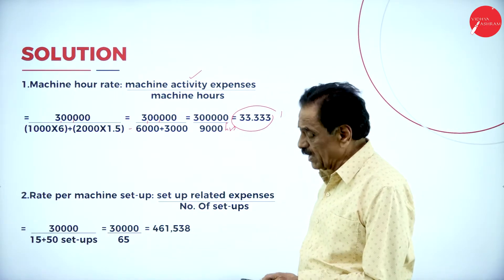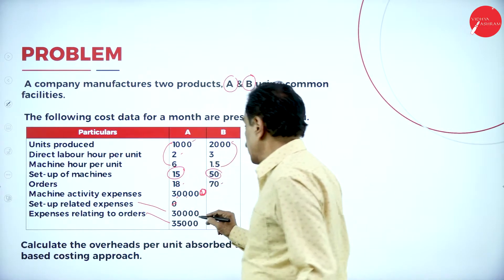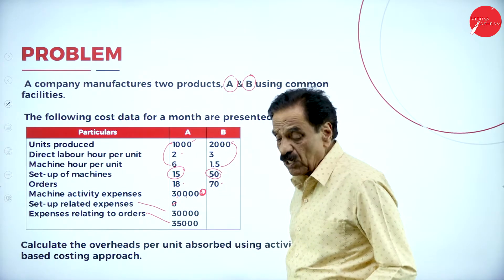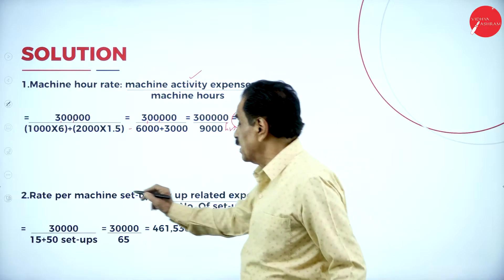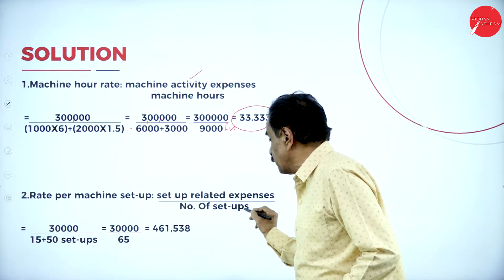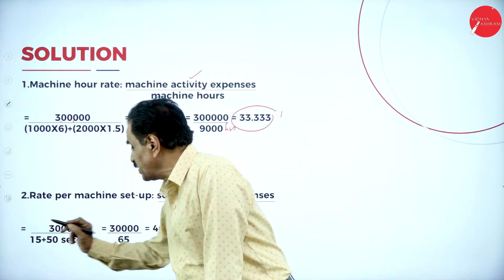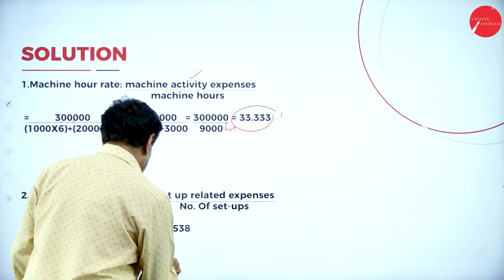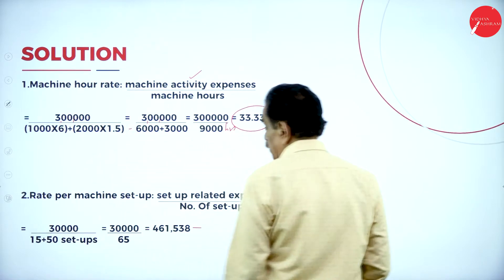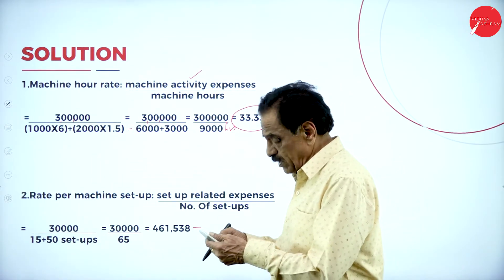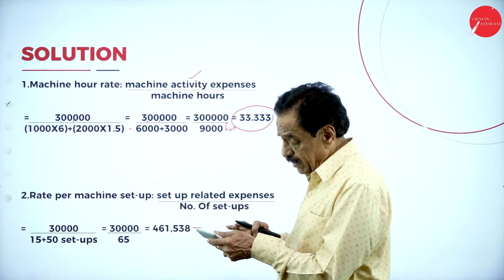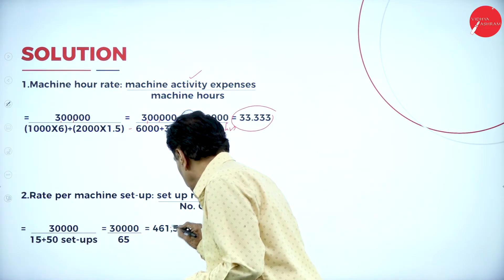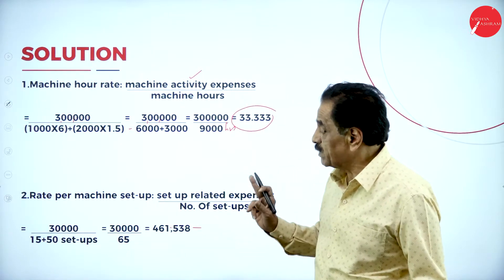Second, Rate per Machine Setup = Setup Related Expenses ÷ Number of Setups. Setup expenses = ₹30,000. Setups: A = 15, B = 50, total = 65 setups. Rate per setup = ₹30,000 ÷ 65 = ₹461.538 per setup.